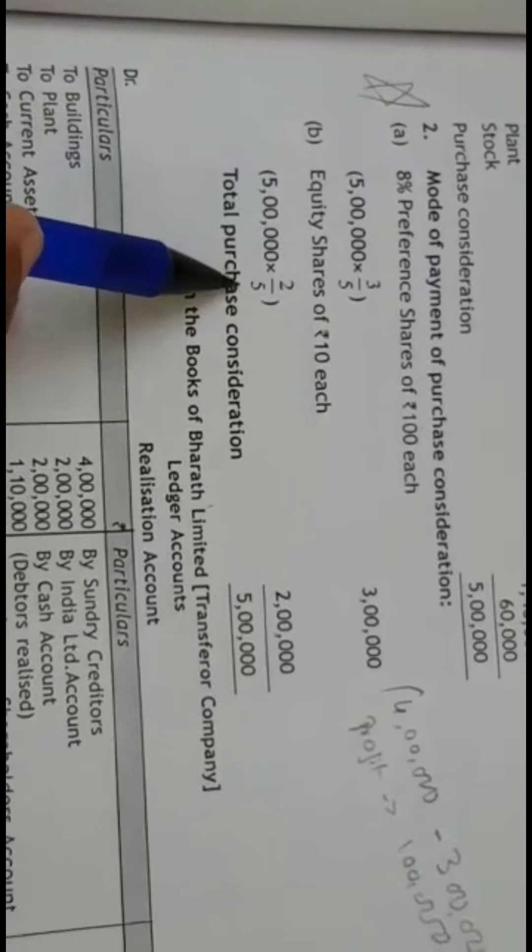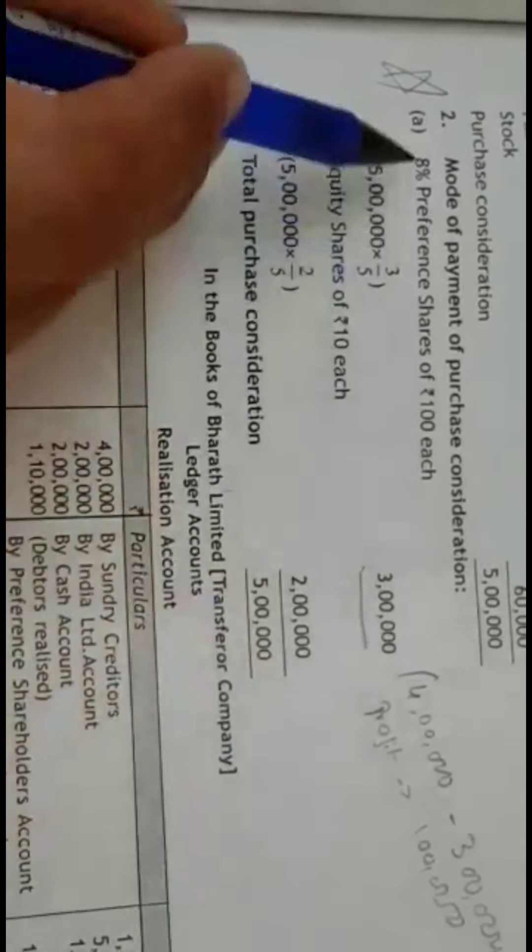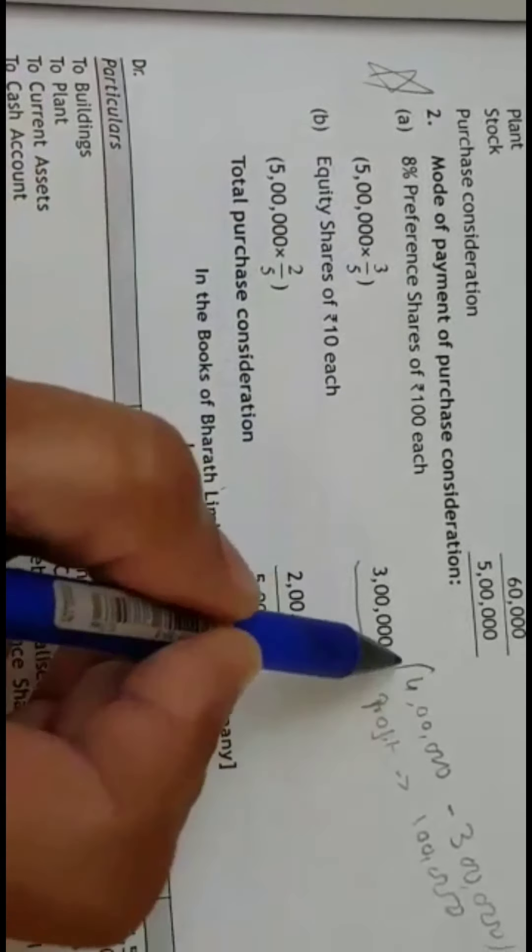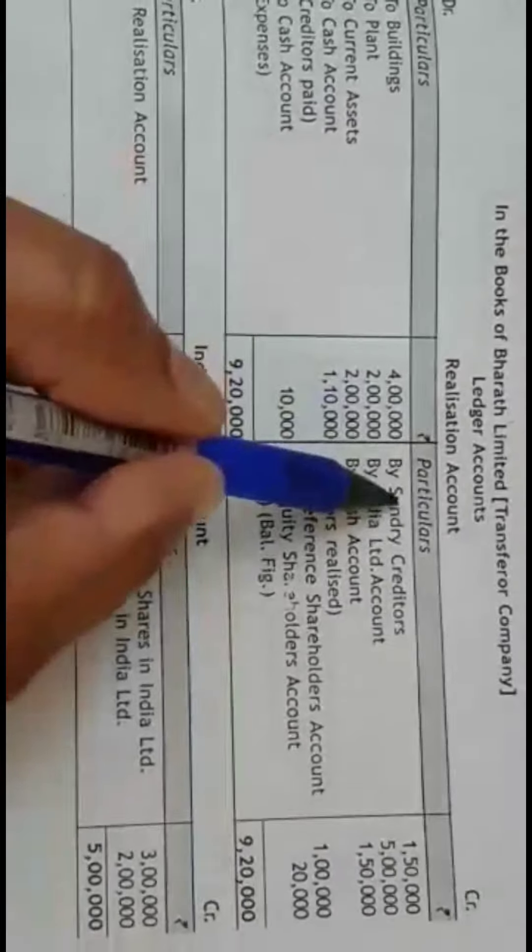5,00,000 into 3 divided by 5, and for equity shares 5,00,000 into 2 divided by 5. The amount is 3,00,000 and 2,00,000. So 3,00,000 is paid in the form of 8% preference shares and 2,00,000 in the form of equity shares. This is the new adjustment in this problem.